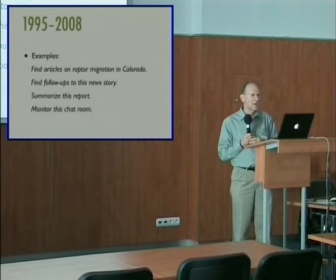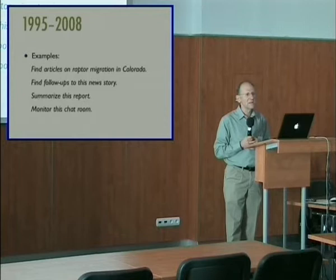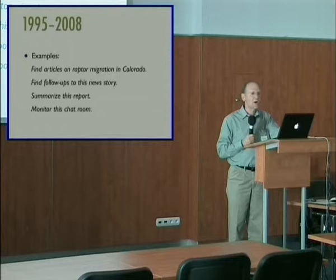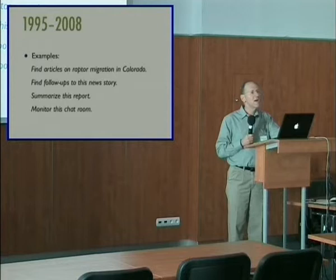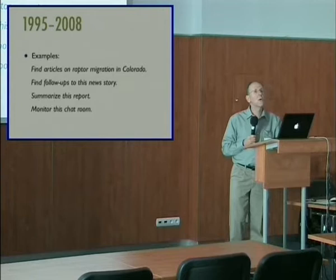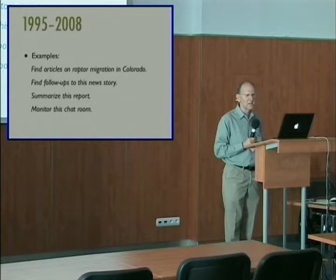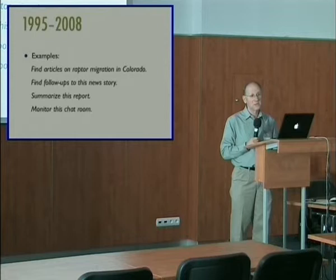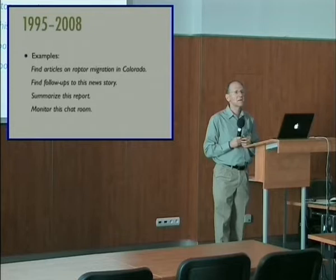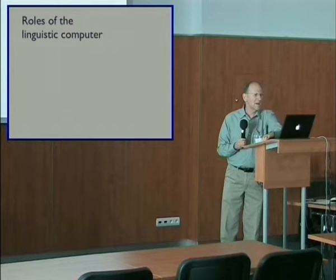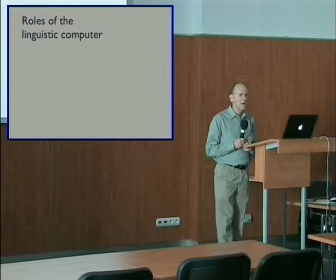So now we spend our time on systems that solve problems like these: find articles on raptor migration in Colorado — that is, search for documents whose words are similar in meaning to other words in the query; find follow-ups to this news story — that is, classify text into bins according to coarse-grained meaning or topic; summarize this report — find sentences in a text that have important meanings; monitor this chat group — look out for sentences that have dangerous meanings. In all these cases, meaning or interpretation depends solely on the text.